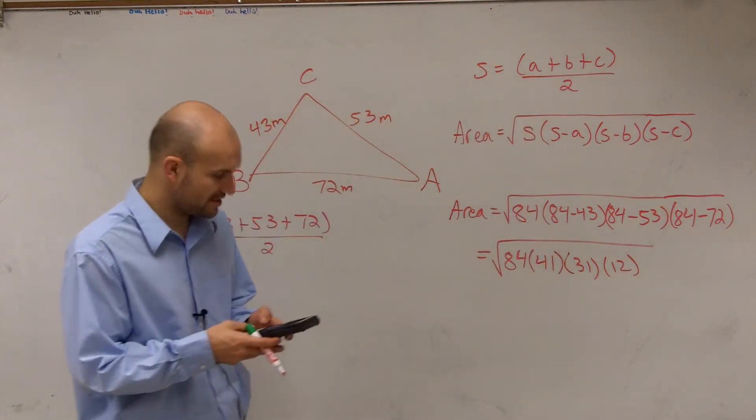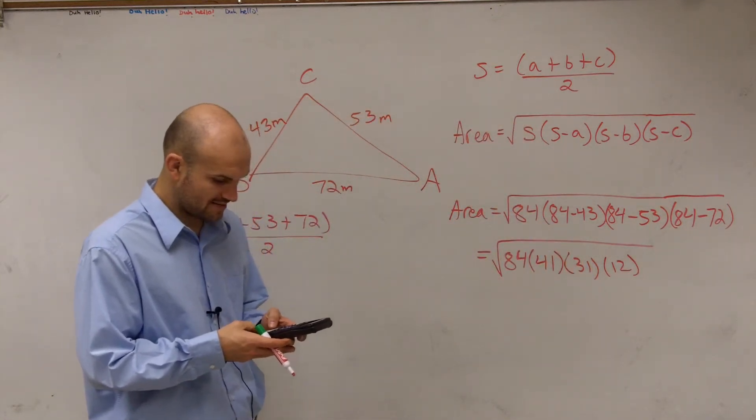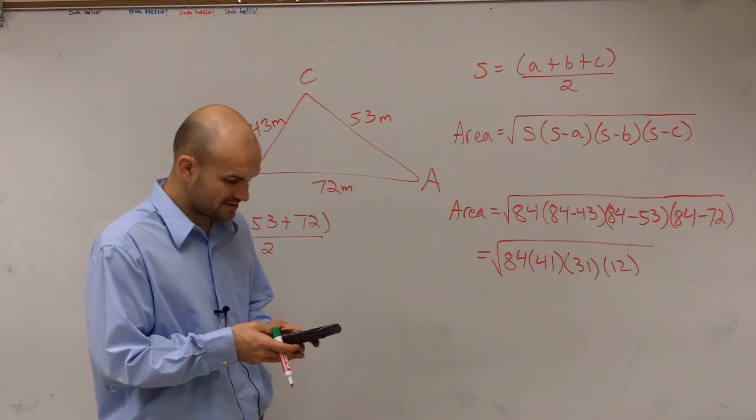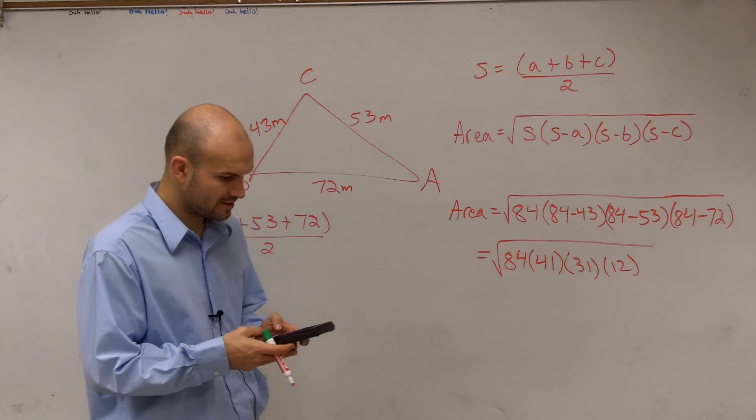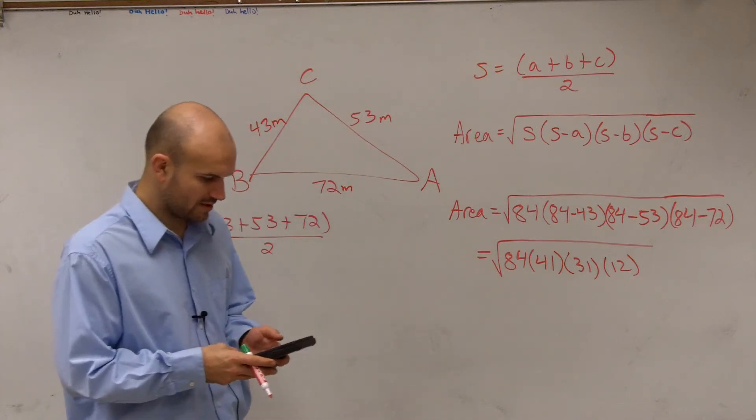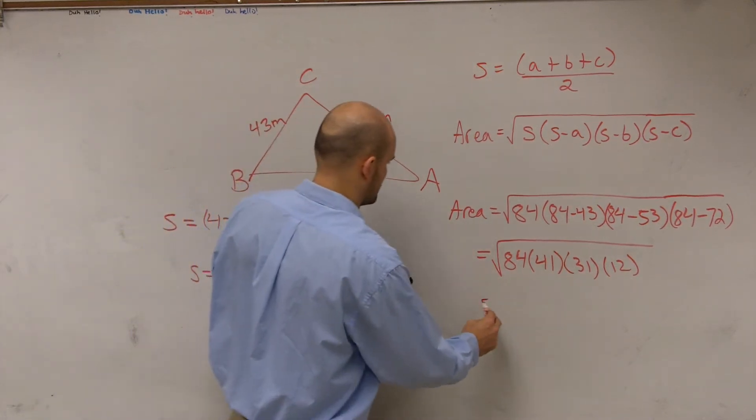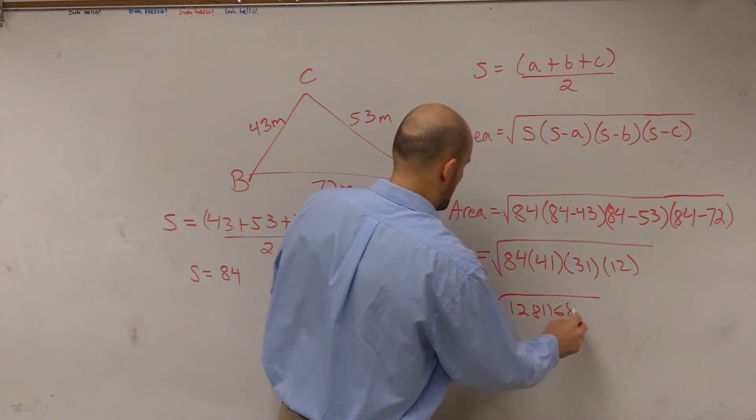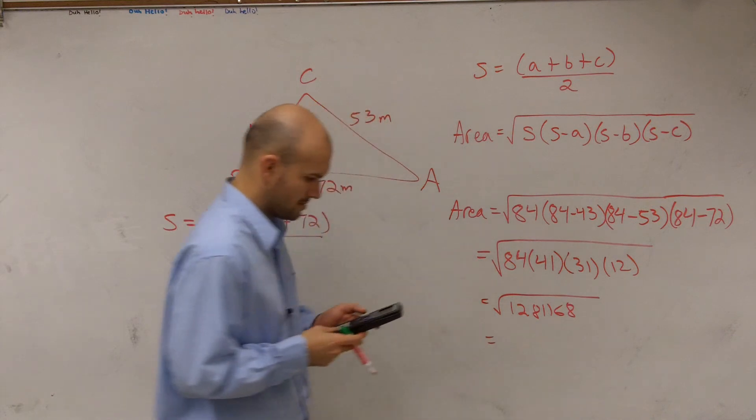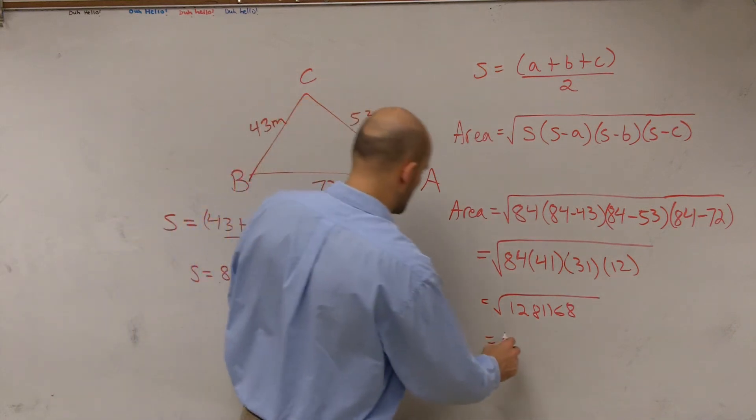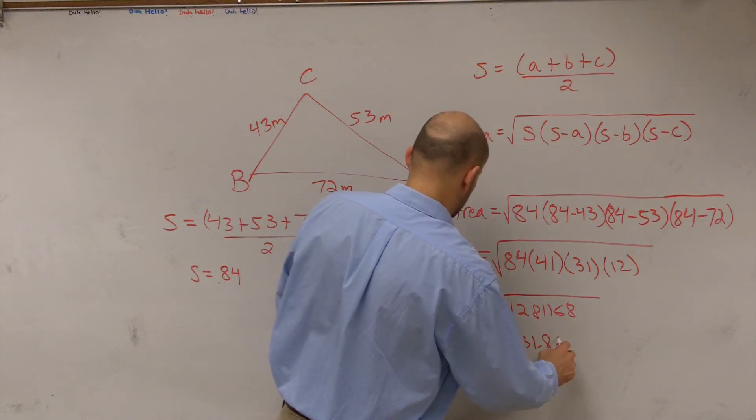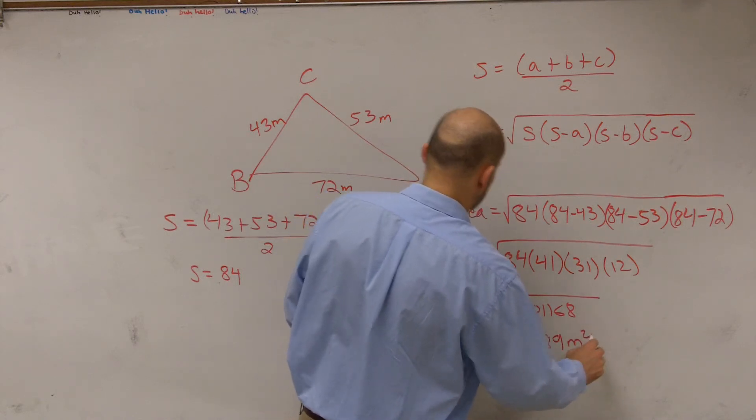Now we'll just multiply all those values. So 84 times 41 times 31 times 12, and then the square root of that big answer is going to be 1,131.89 meters squared.